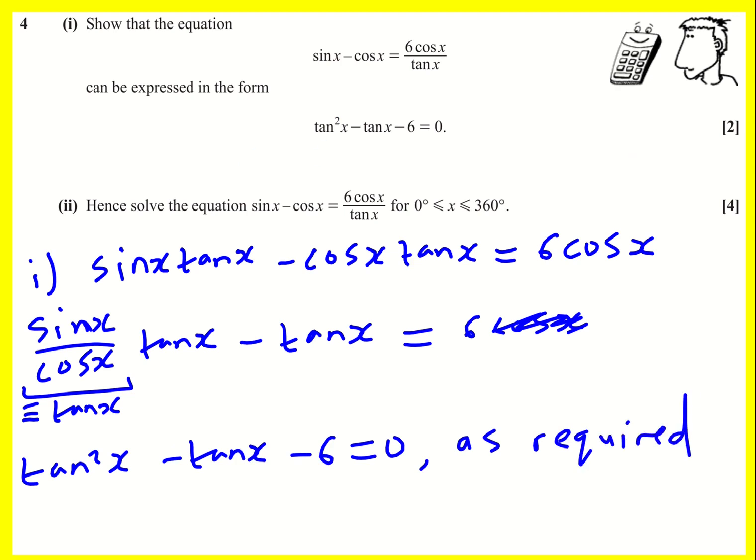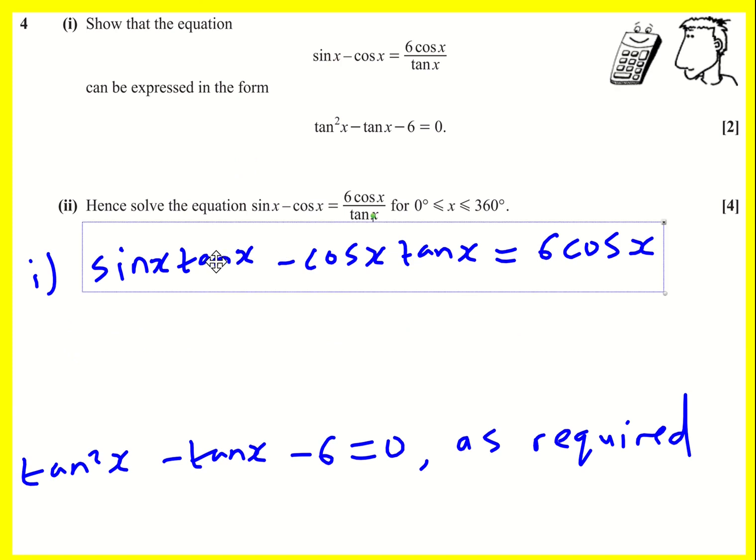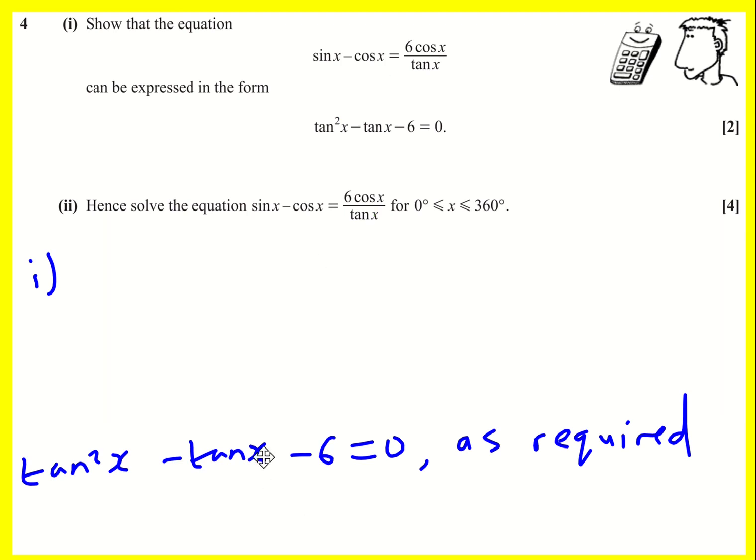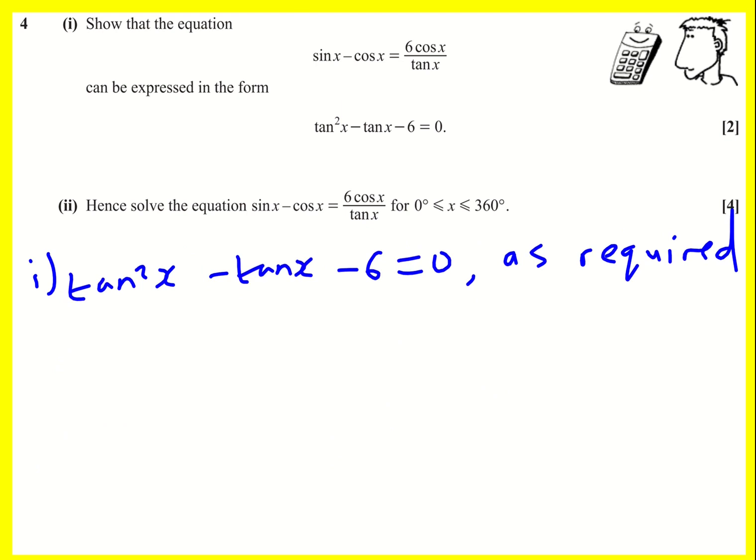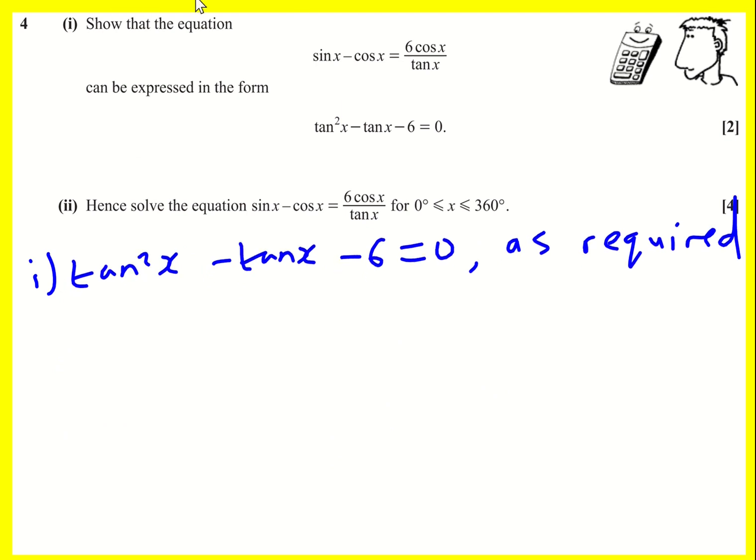Okay, brilliant. Part 2. We've got to now solve this equation in the range 0 to 360. And part 1 is going to help us. Try and solve this as it is, it's going to be very awkward. Actually, the way you have to do it is to turn it into a hidden quadratic, as has been done in part 1. So let's use that.